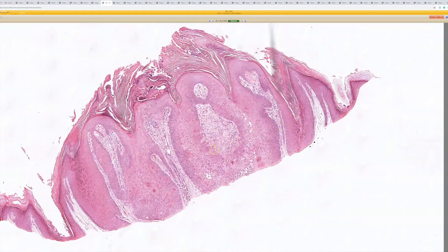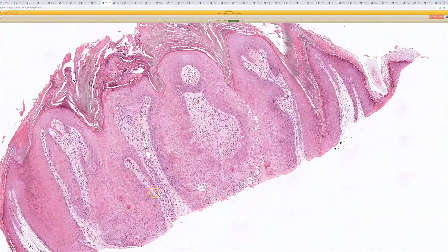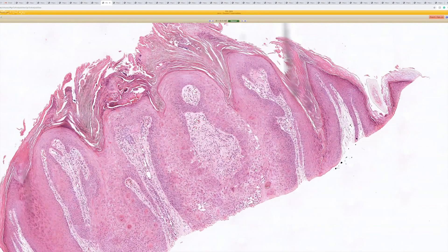So I think those are all three benign things that can look like one another. And the main thing is that you don't confuse them with a carcinoma. So a nice example of inverted follicular keratosis.